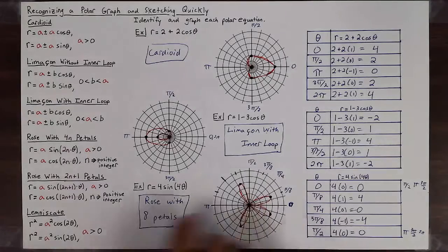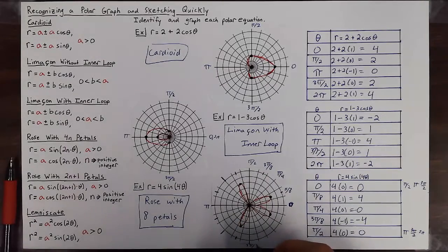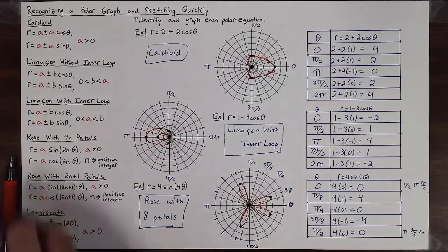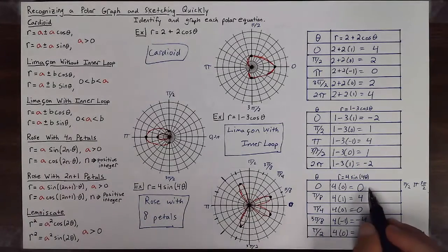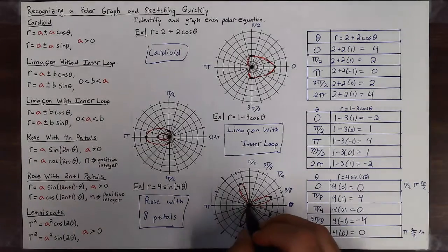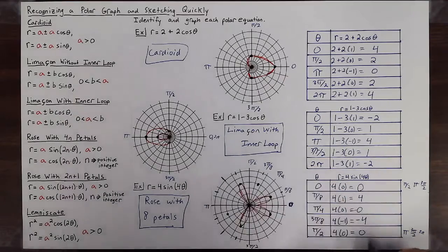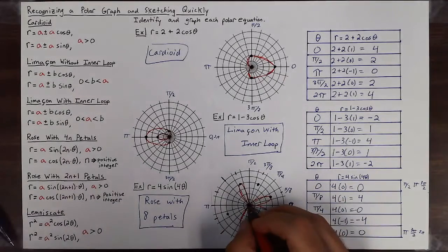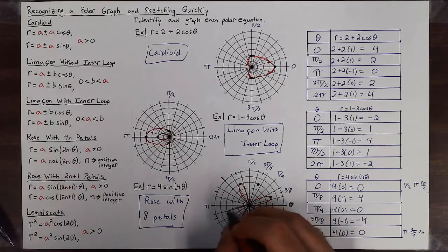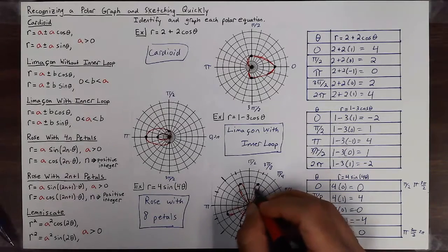We repeat the same process for the third cycle, π to 3π/2. Again halfway through and halfway between those intervals. After π is zero, the next mark is at four, then zero, then negative four, then back to zero at 3π/2. Pi is here, then it comes out to this point, back in, back out, back in — two more petals.